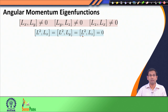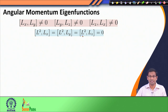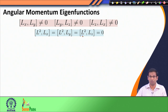There would always be some uncertainty in one of these observables. However, when they commute, we can have a common complete set of eigenfunctions for these two operators. Therefore, we cannot simultaneously determine the value of Lx and Ly, or Lx and Lz, or Ly and Lz, whereas we can determine simultaneously and precisely the value of either L² and Lz, or L² and Ly, or L² and Lx.